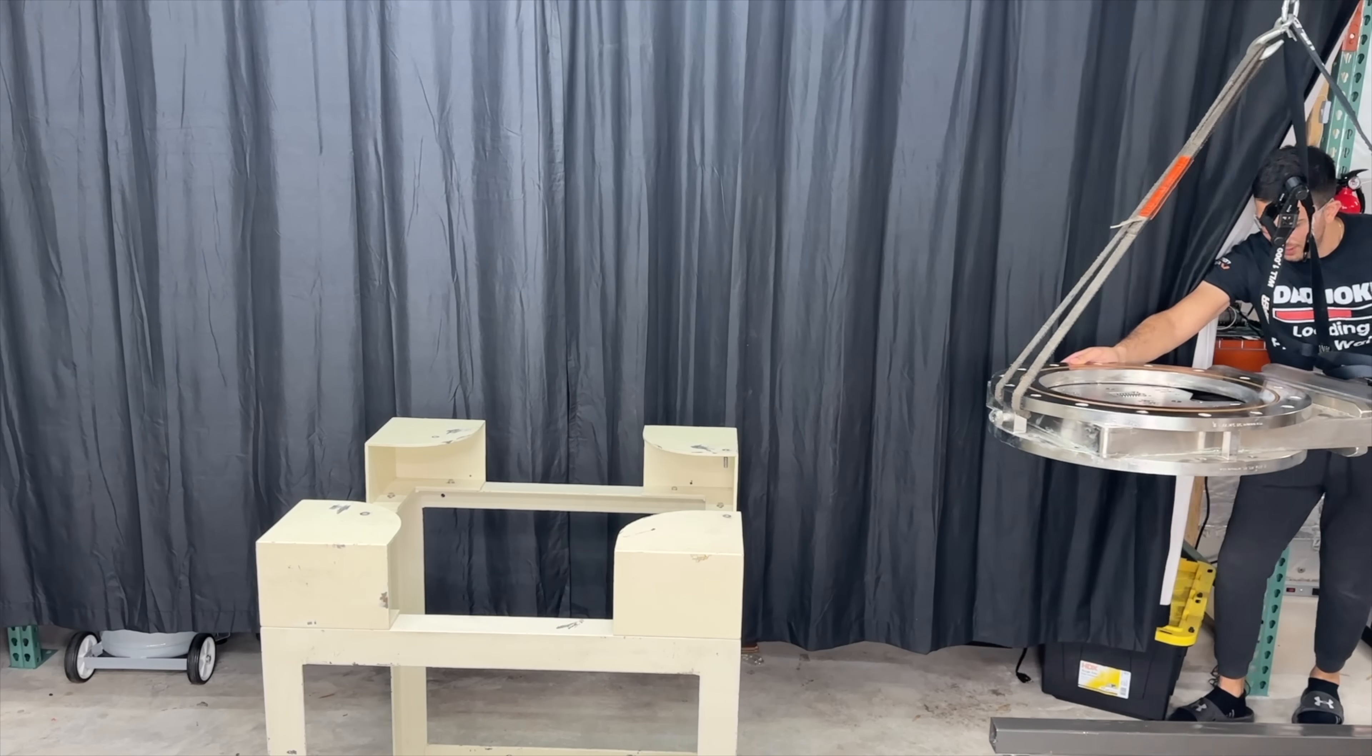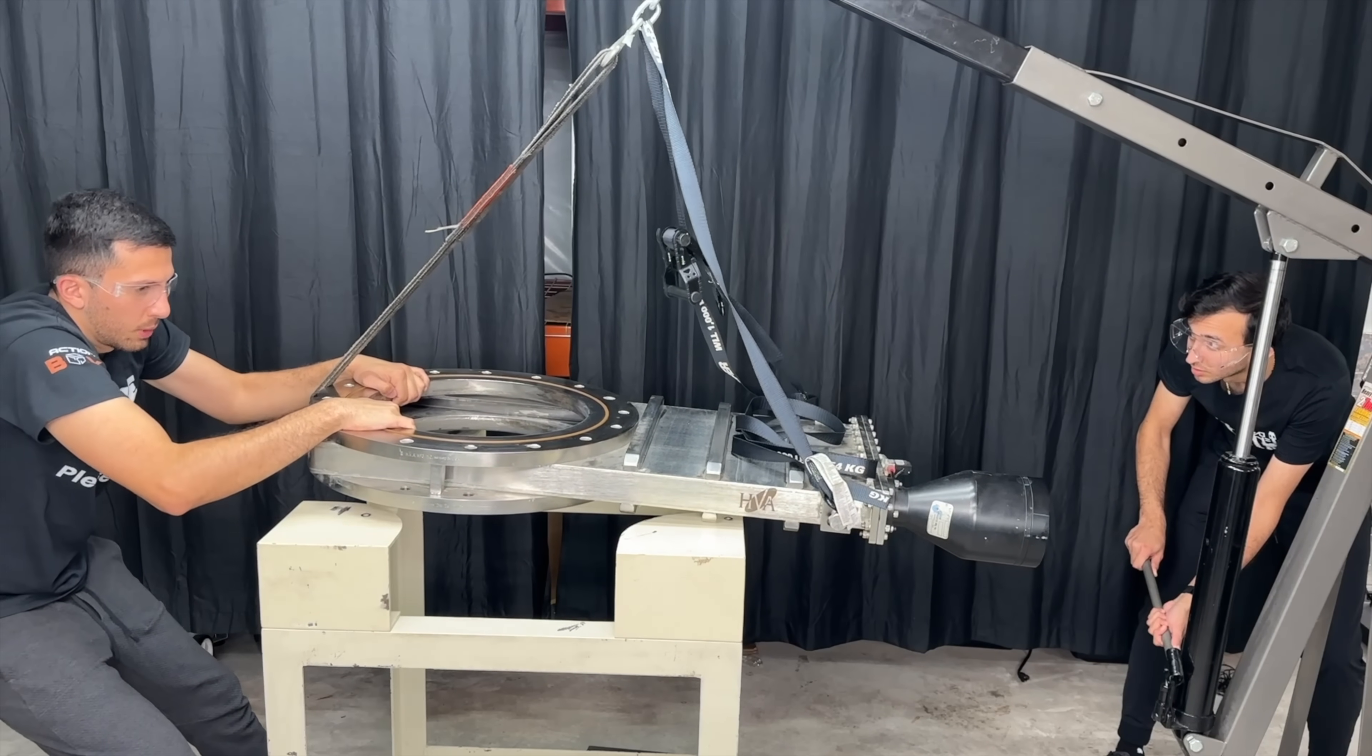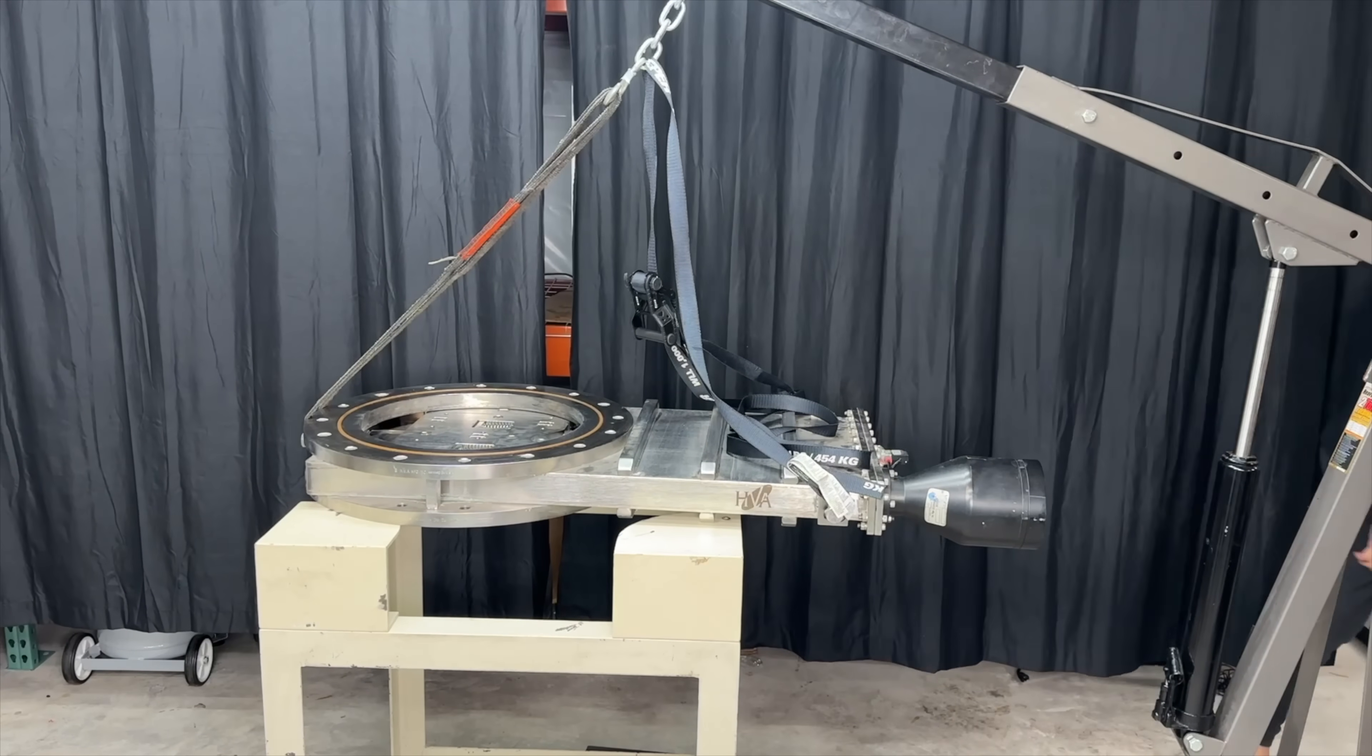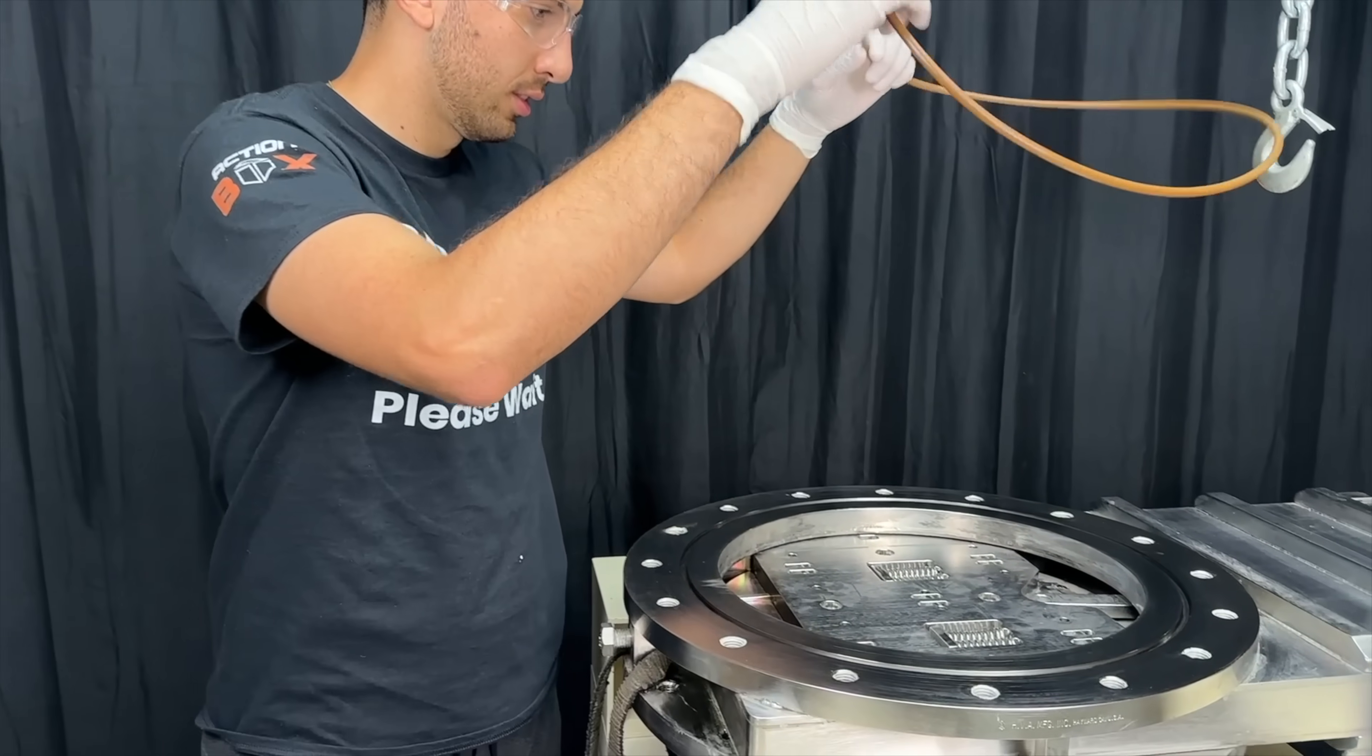Next, we bring over the bottom gate valve which I'm only using as a flange to keep the chamber closed on the bottom. As always, we can't forget to have fun in the process. I'm also taking a second to clean off this massive O-ring to make sure we don't have any leaks.